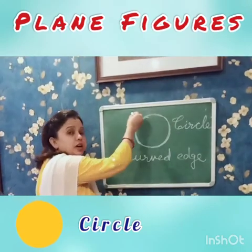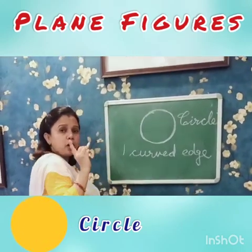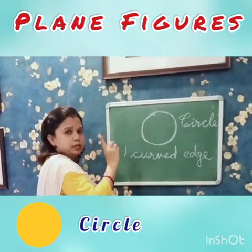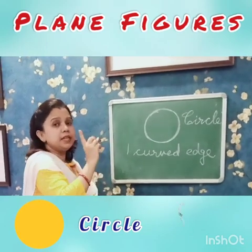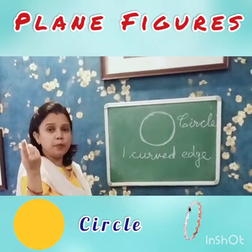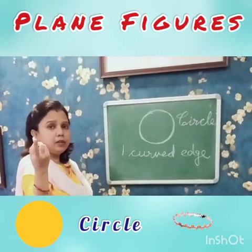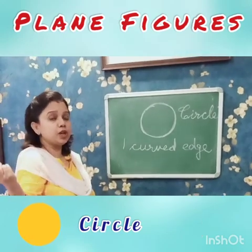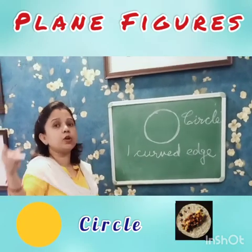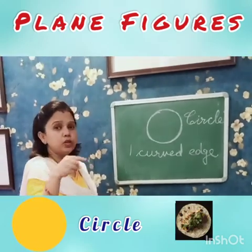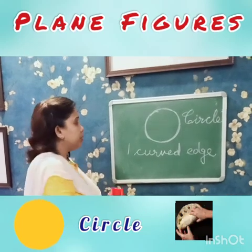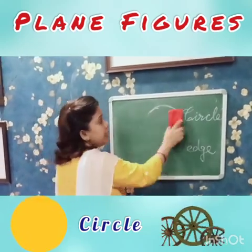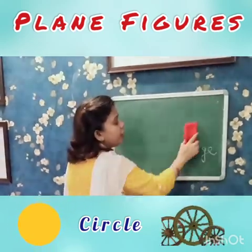Can you see any vertices, any corners? No, it has no corners. Like you all have seen a bangle — your mother wears a bangle. Your mother makes chapati; rotis are also circular, round in shape. Then wheels — these are some circular objects.